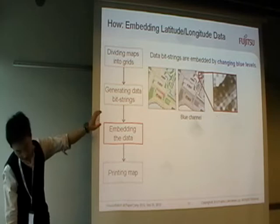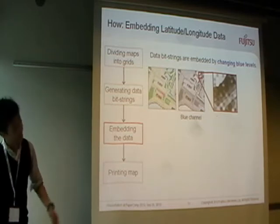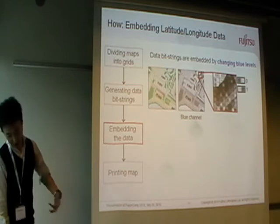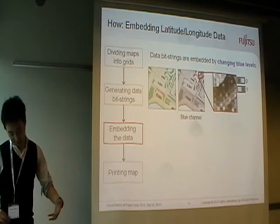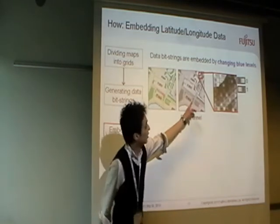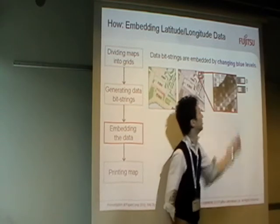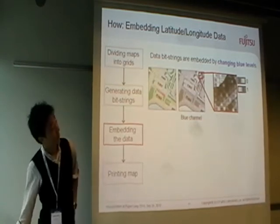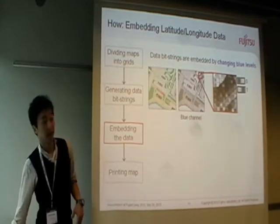The data embedding system divides a map grid into small blocks and makes pairs of the blocks. The blue gradation level of each block pair is sampled and changed to show the data bit. If one is assigned to the data bit, the right level is greater than the left level. If zero is assigned to a block pair, the blue level is changed so that the left level is greater than the right level.